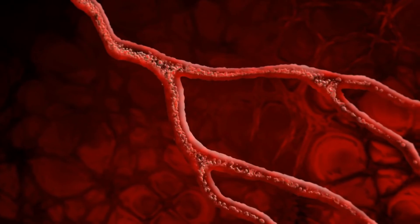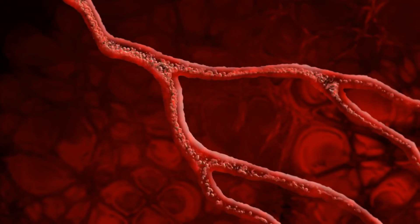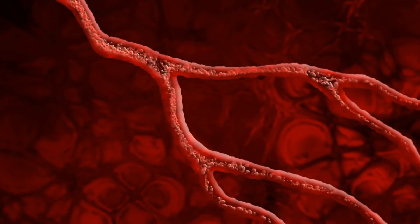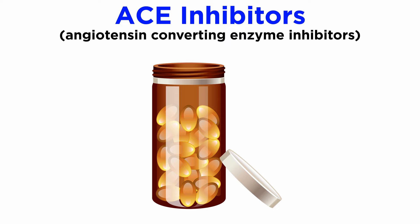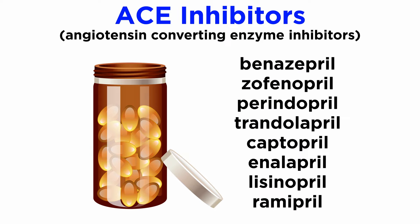There are many classes of drugs that influence cardiovascular function, which in turn treat a variety of cardiovascular pathologies. To start, we will discuss angiotensin converting enzyme inhibitors, usually abbreviated as ACE inhibitors. ACE inhibitors are usually identifiable by the suffix -PRIL. For example: benazepril, zephenepril, perindopril, trandolapril, captopril, enalapril, lisinopril, and ramipril.